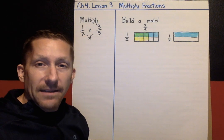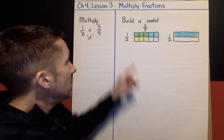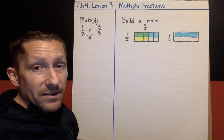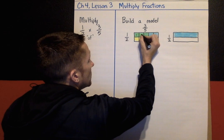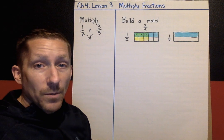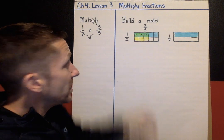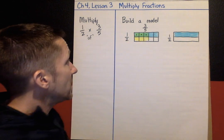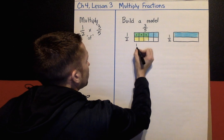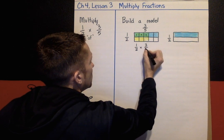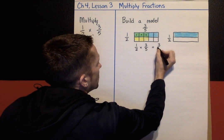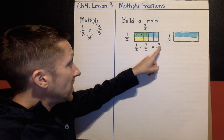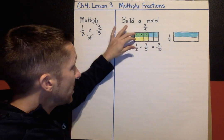The boxes that are double-shaded give me my answer. So one-half times three-fifths — look at my model. The brownies that are double-shaded are this one, this one, and this one. The double-shaded brownies are one, two, three, out of how many brownies are in the whole pan? Two, four, six, eight, ten. So the answer is one-half times three-fifths equals three-tenths.